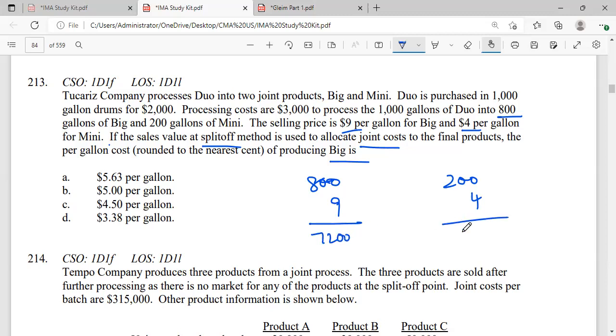And 200 into 4 is 800. Now if I have to apportion this, the total of these two is 8,000. 7,200 divided by 8,000 equals 90%.